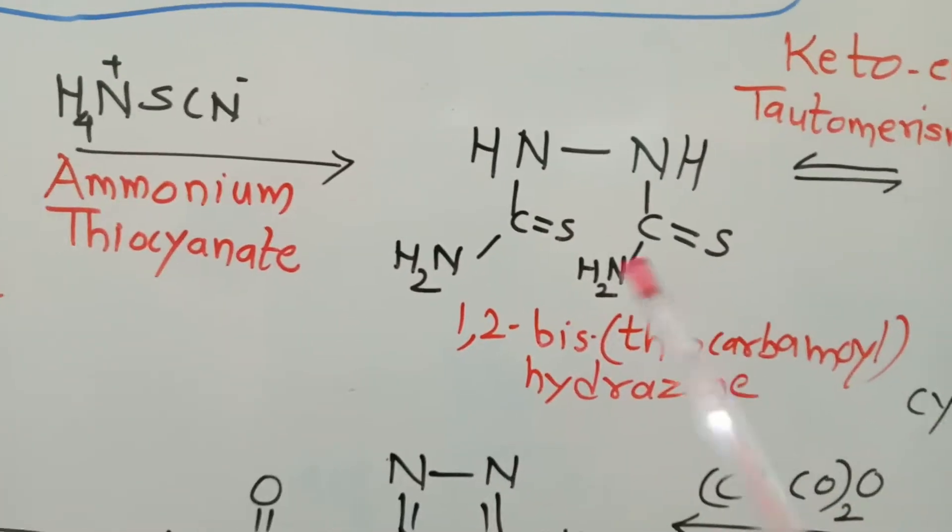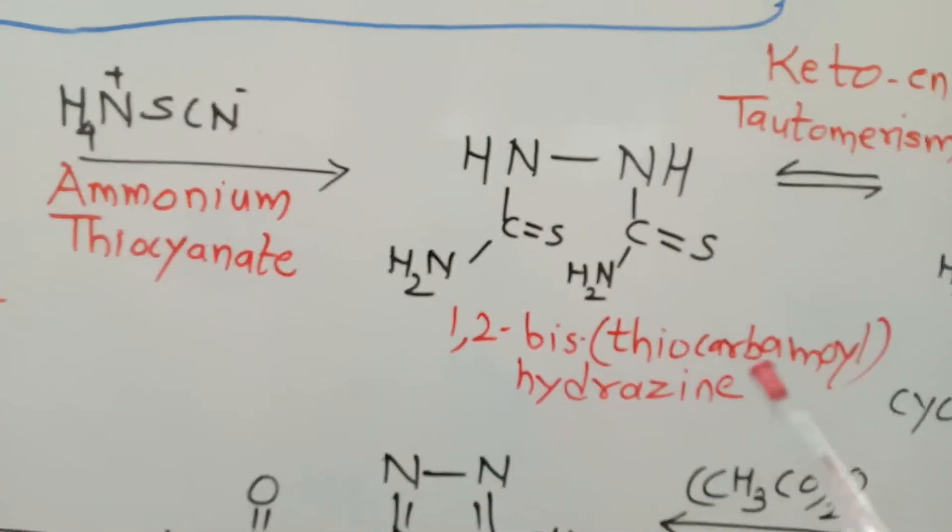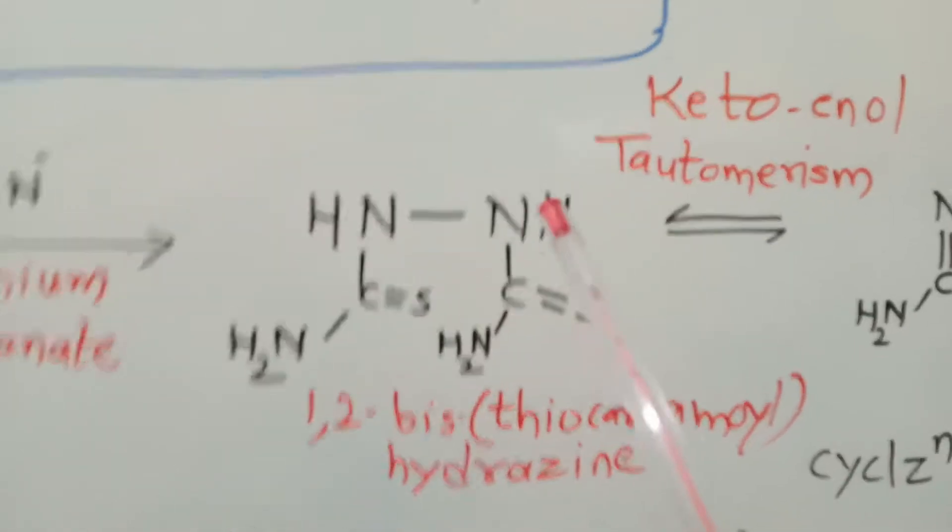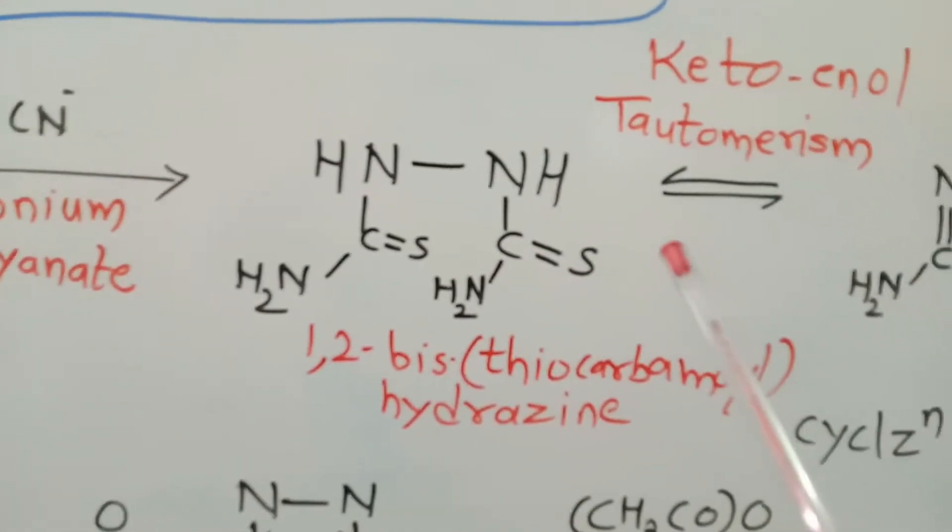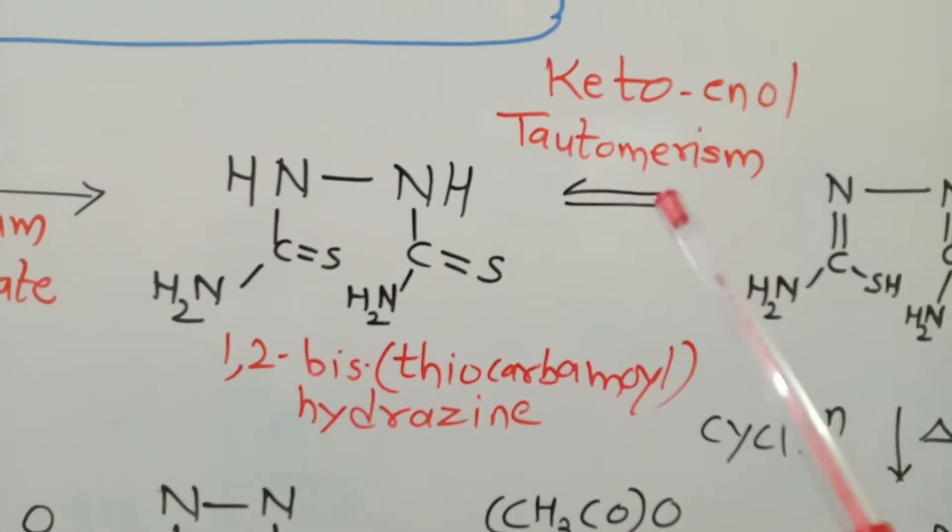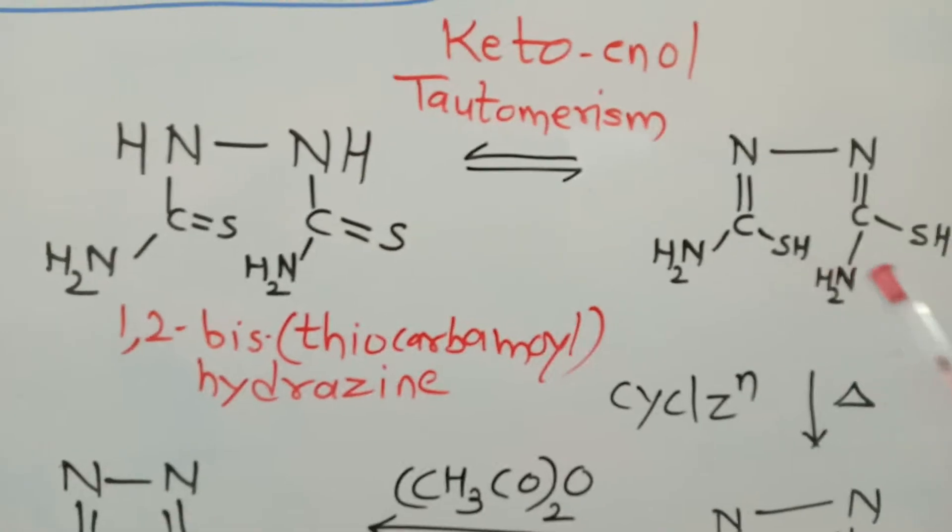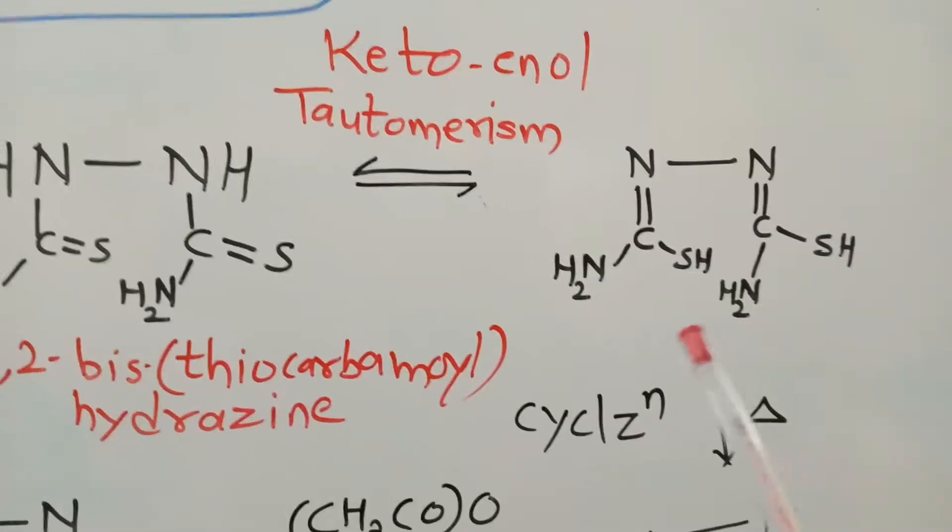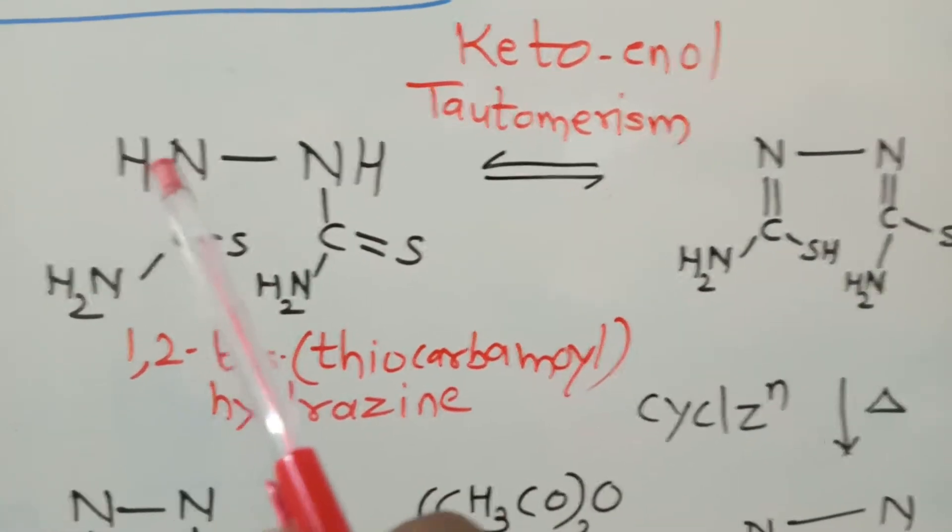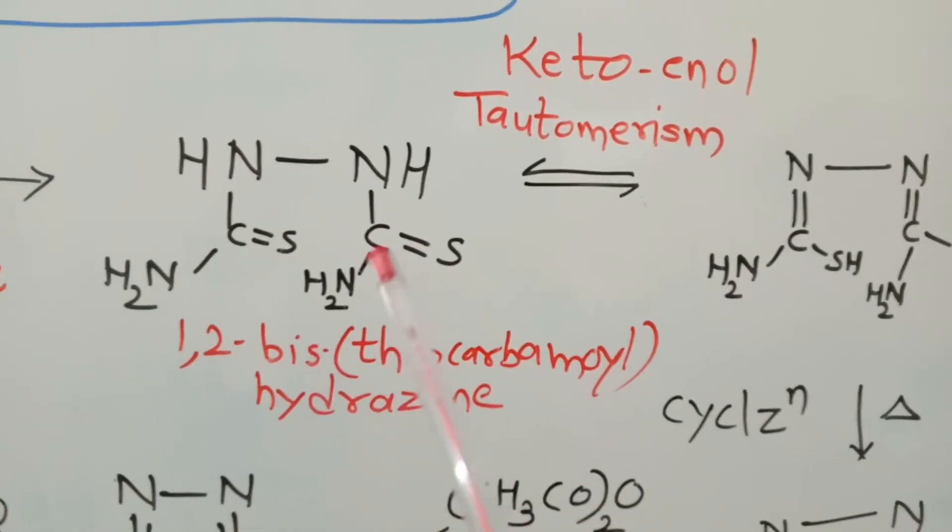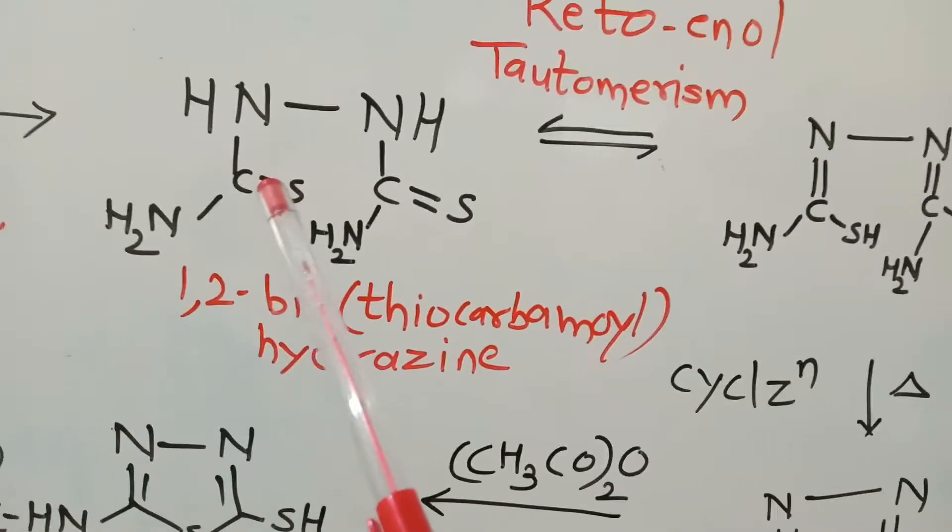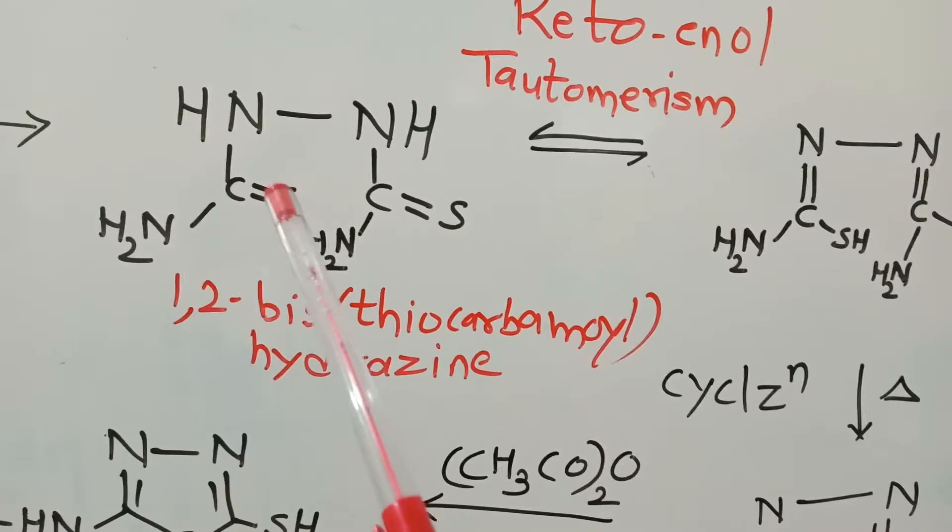In this case, it is a bis-thiourea which is called 1,2-bis-thiocarbamoyl hydrazine. Here is a thio-keto group C double bond S. It undergoes the typical keto-enol tautomerism to give an isomer like this. Here you will find that the hydrogen on this nitrogen will move on to the sulfur. Hence, the double bond will be formed between carbon and nitrogen and mercapto group is formed from sulfur and hydrogen.